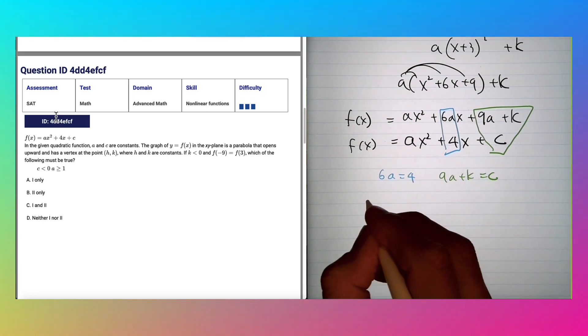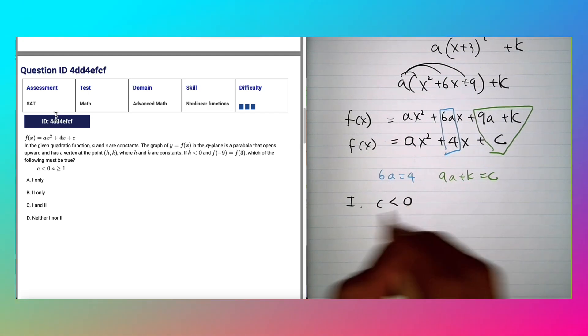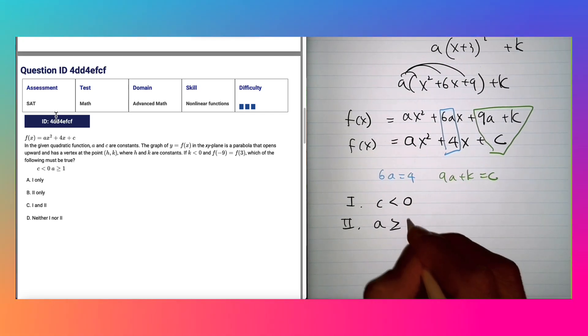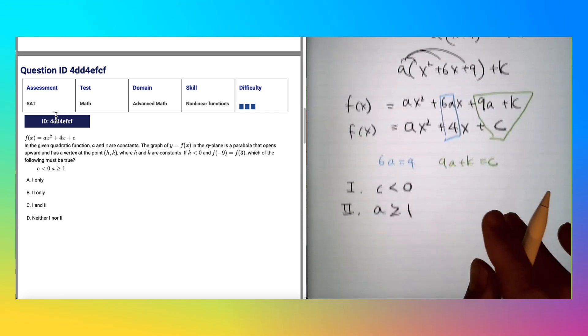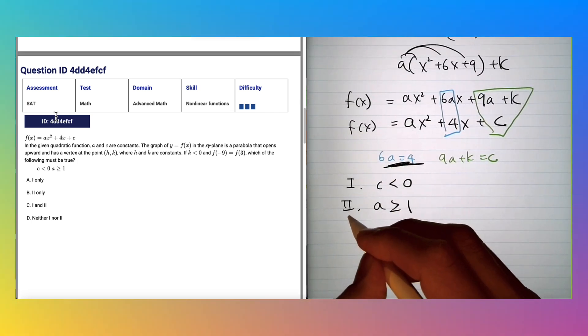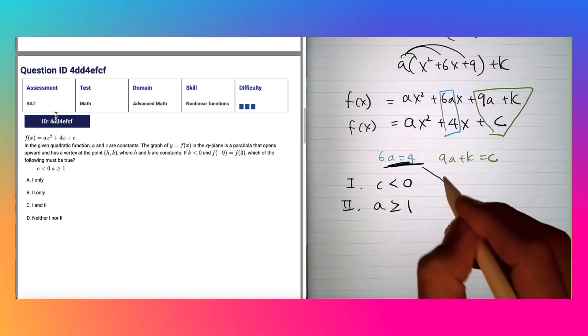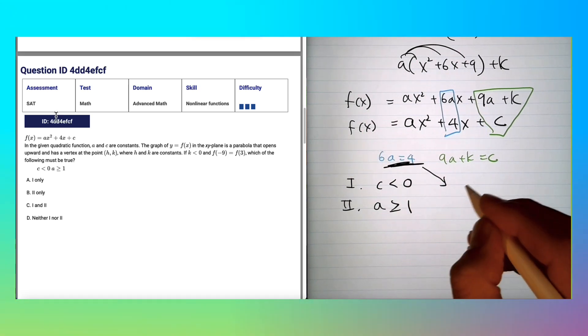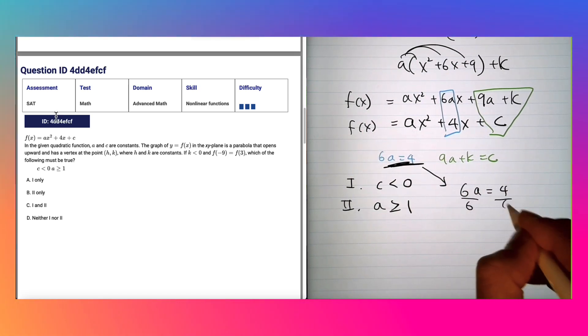It should have been printed as c is less than zero, and a is greater than one or greater than or equal to one. Now from this we can already determine the second statement true or false, because this, you see here, 6a = 4 means just divide 6 on both sides and a = 2/3.